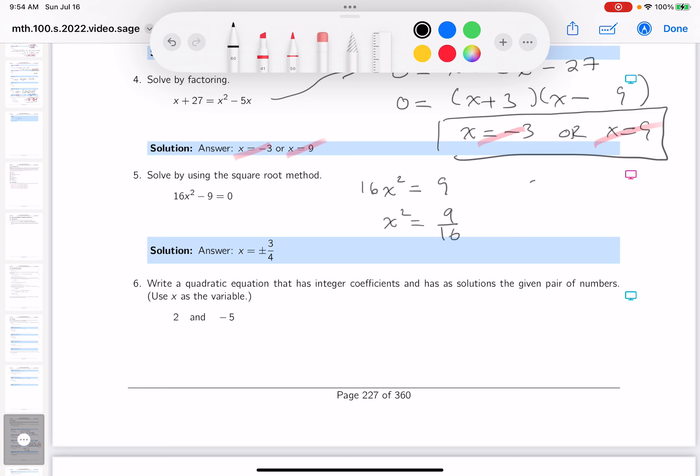So I've got my square, so I'm going to say x is equal to plus or minus the square root of 9 sixteenths. Well, let's see if we can do that.